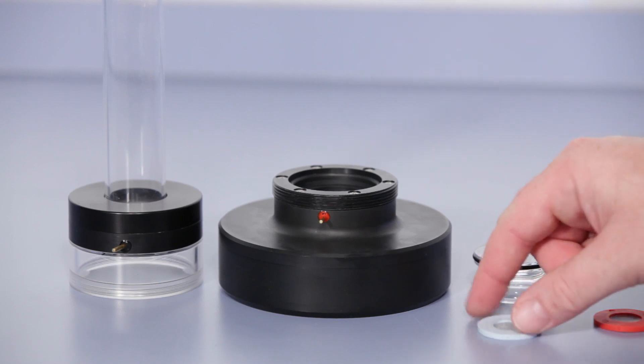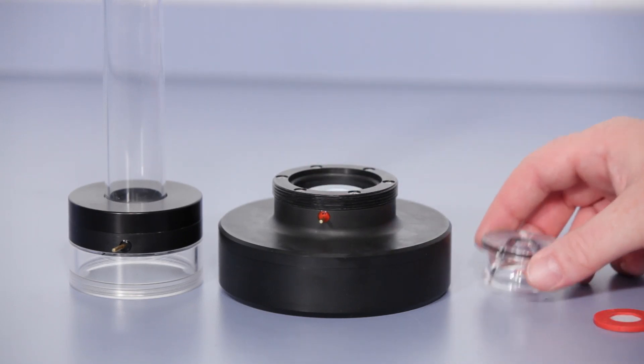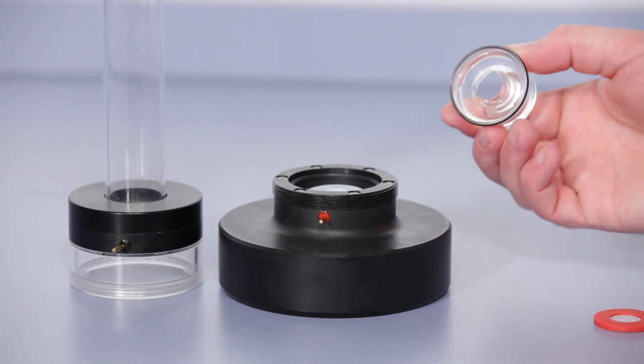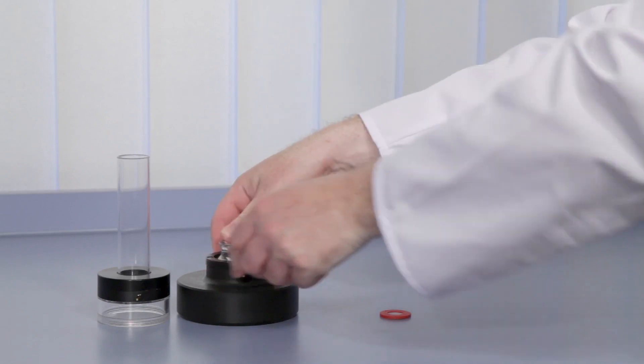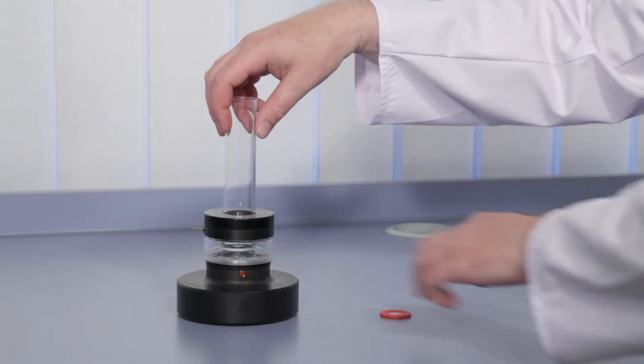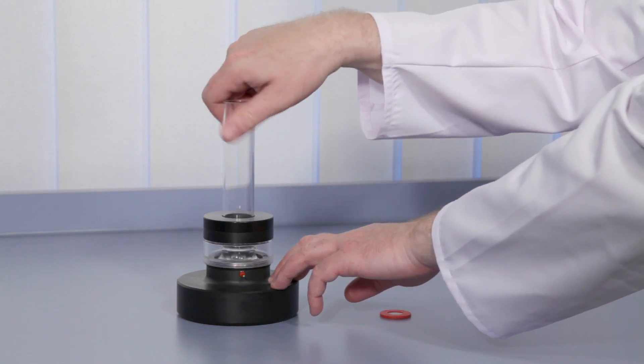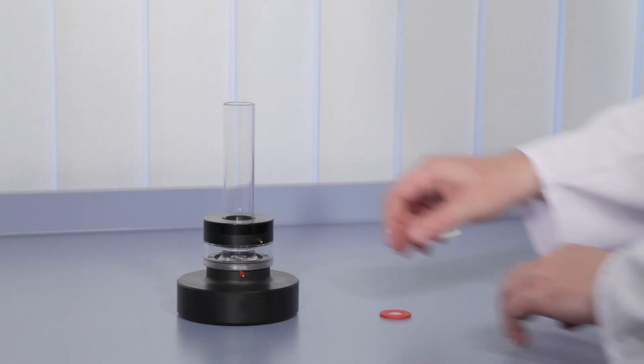To reassemble the measuring cell, position the screen, push in the adapter piece with its smaller opening facing towards the screen, and screw on the suction tube until the two electrode pins are in parallel. Avoid over-tightening the suction tube to prevent damage.